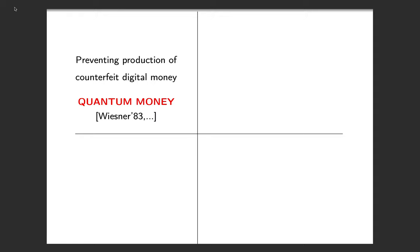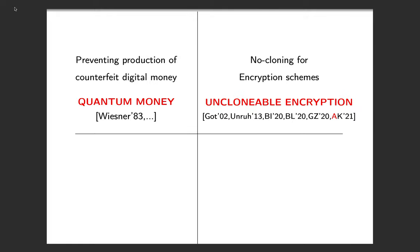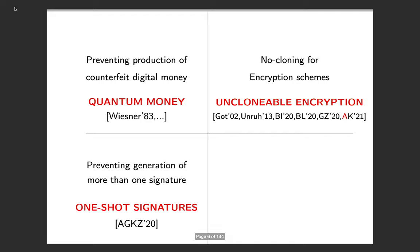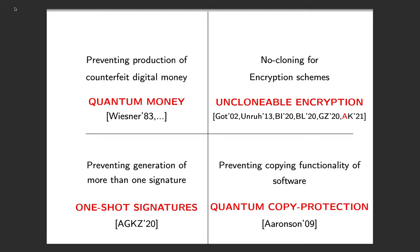In 1983, Wiesner came up with the brilliant idea of associating money with quantum states in such a way that an adversary cannot produce many copies of the money state. This principle has also been studied in the context of encryption schemes, where ciphertexts are quantum states such that you cannot produce two ciphertexts that both decrypt the same message. It has also been studied for signatures. Finally, the no-cloning principle has been useful for preventing software piracy, and the notion studied is called quantum copy protection, first introduced by Aaronson.